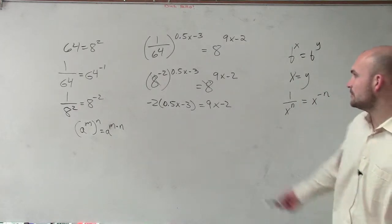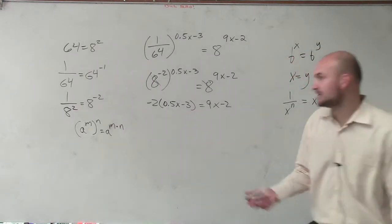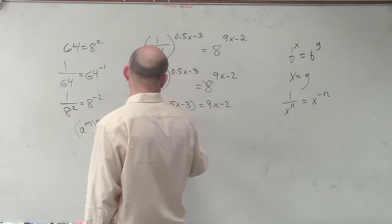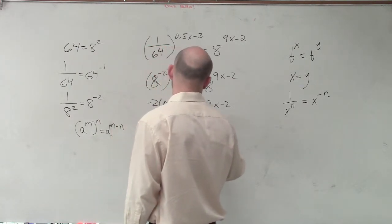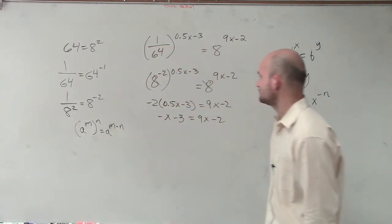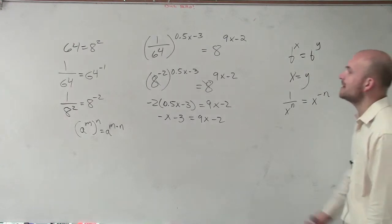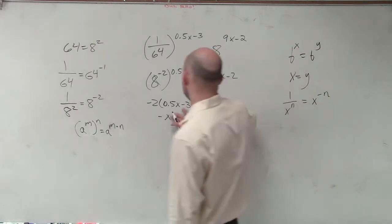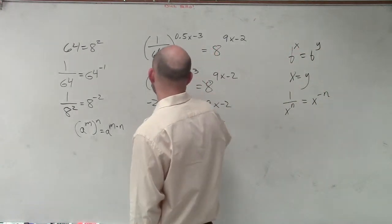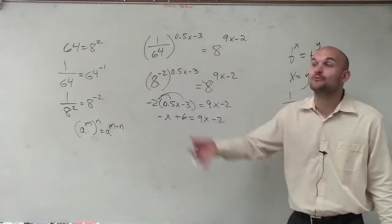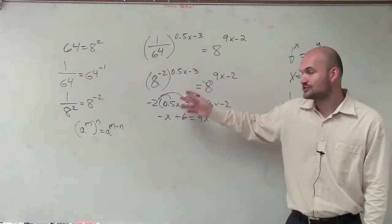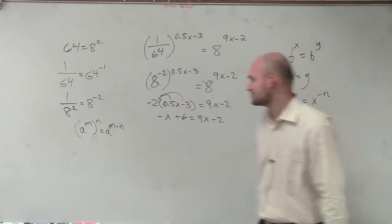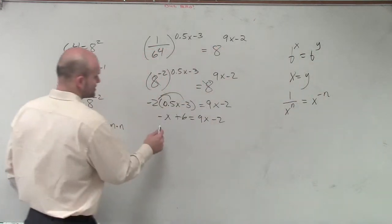So when I multiply that through, negative 2 times 0.5 is just going to give me a negative x minus 3 equals 9x minus 2. When it was minus 6. Minus plus 6. Thank you very much. I forgot to apply my distributive property. That's why I always want to make sure you write in the distributive property, just so you don't make a little mental mistake.